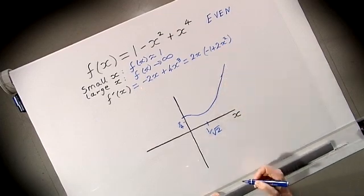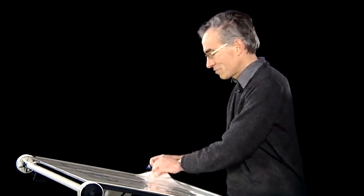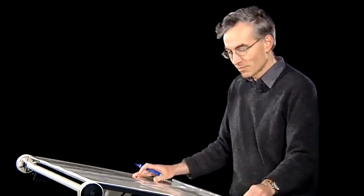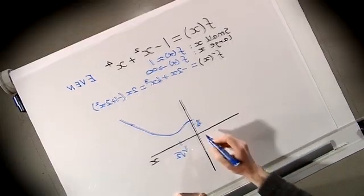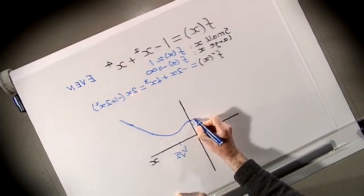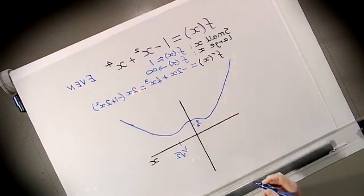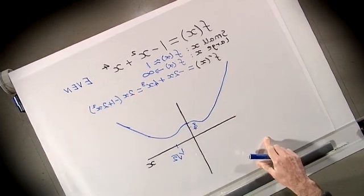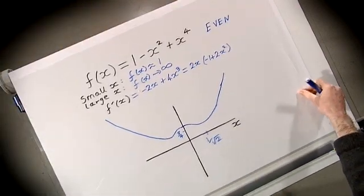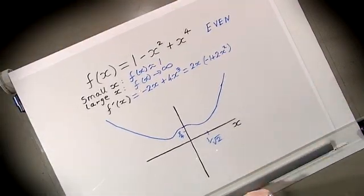After the minimum the function becomes increasing again, so the shape for positive x goes from 1 at the origin, decreases to a minimum of 3/4 at x = 1/√2, then increases toward infinity. For negative values of x we use the fact that the function is even and reflect in the line x = 0, completing the sketch with the same shape reflected.